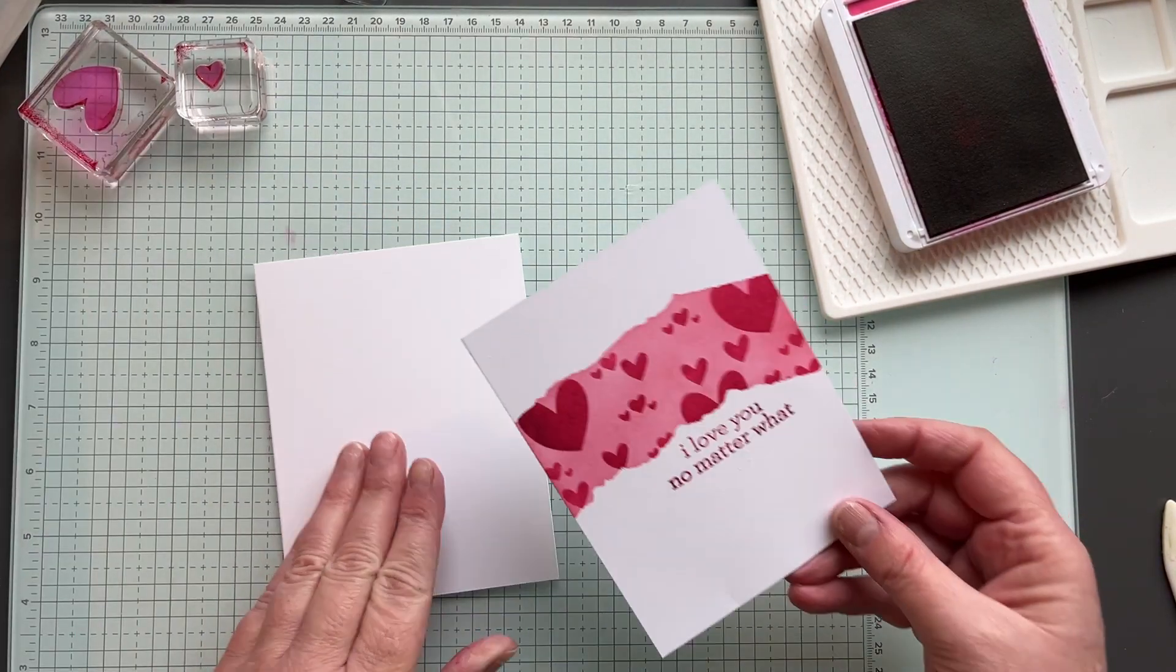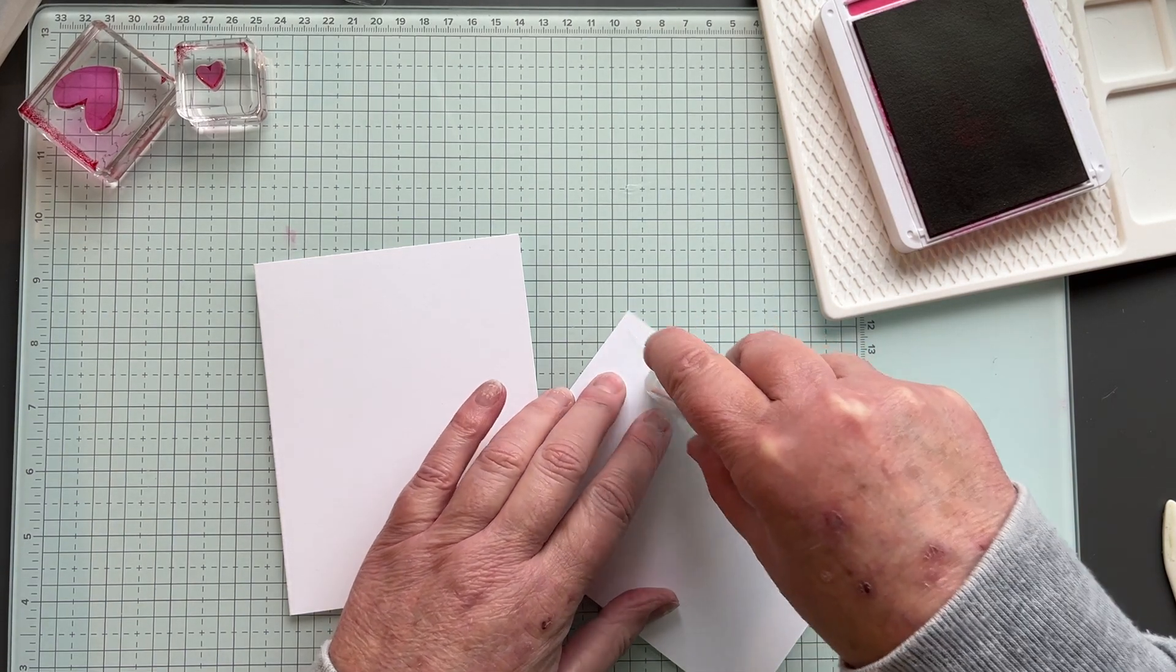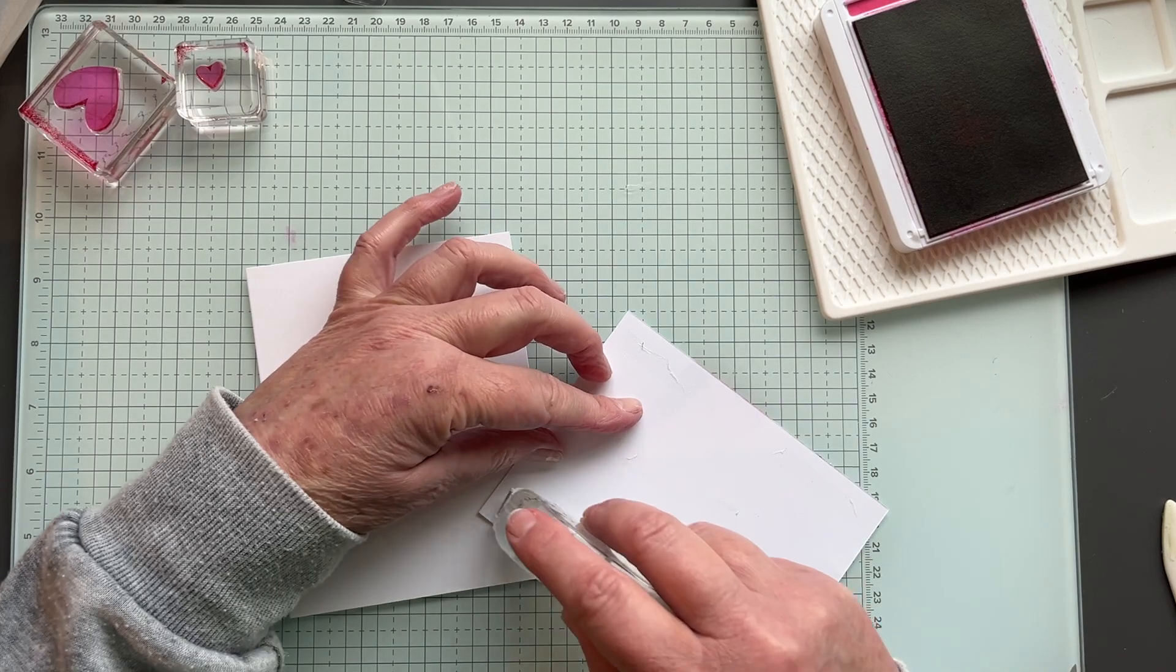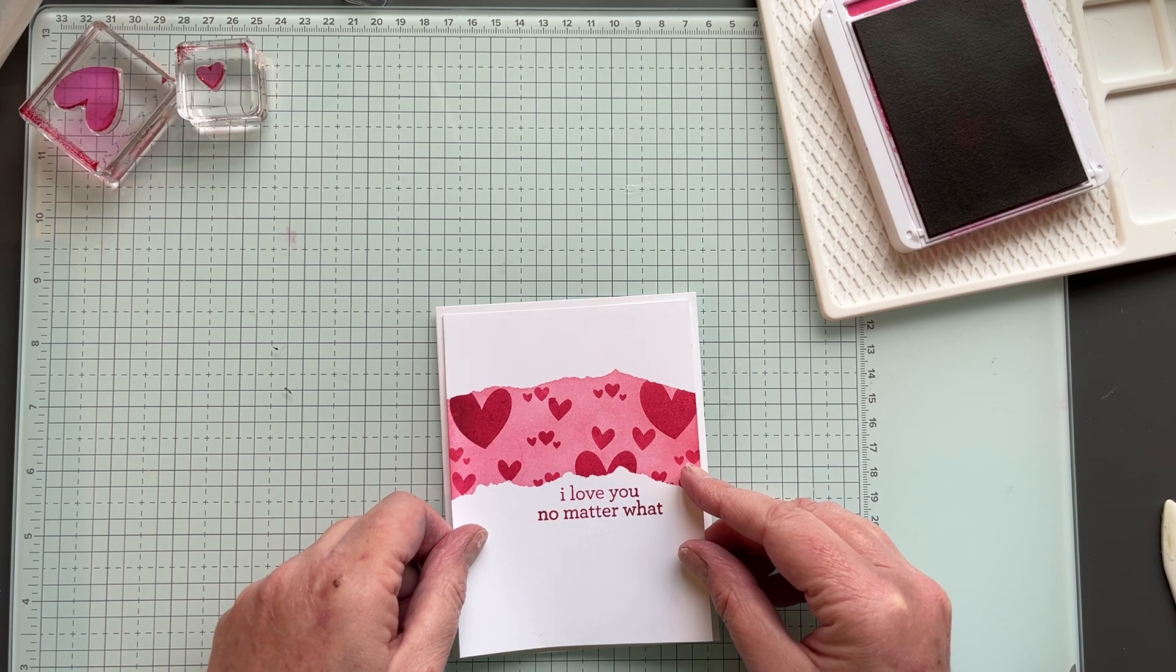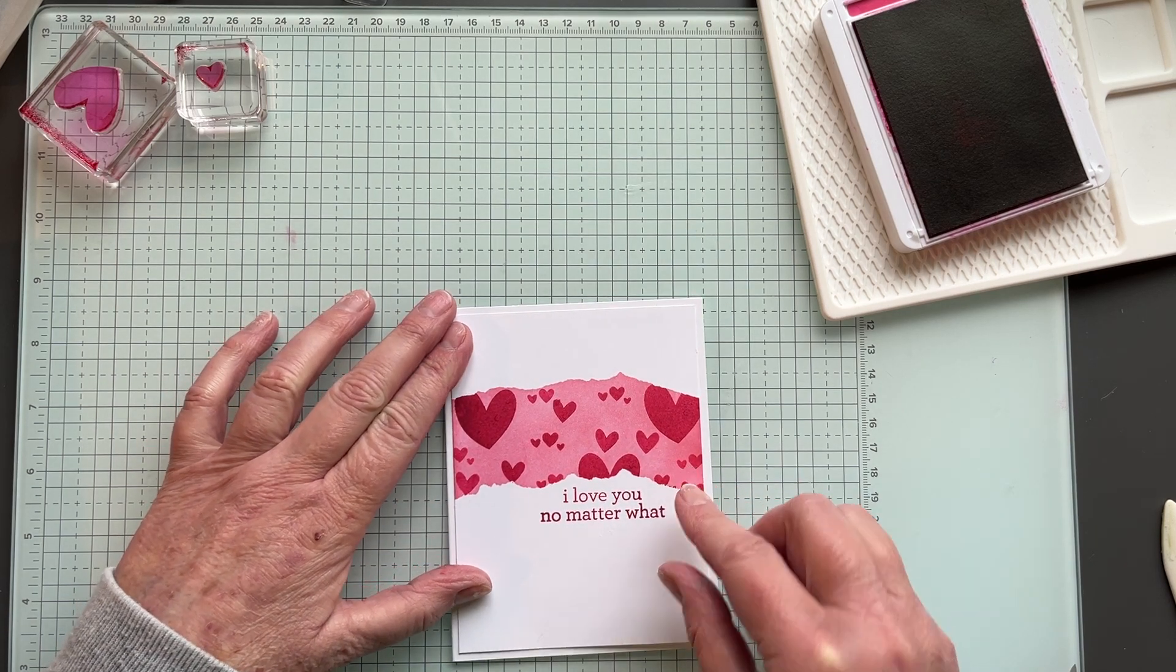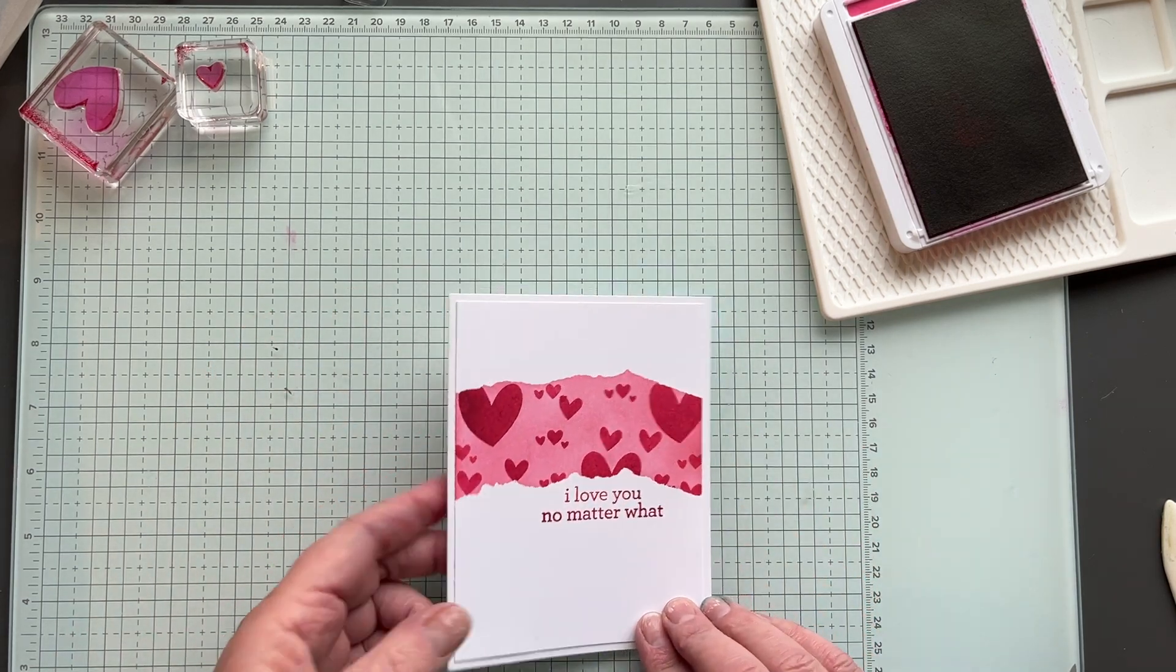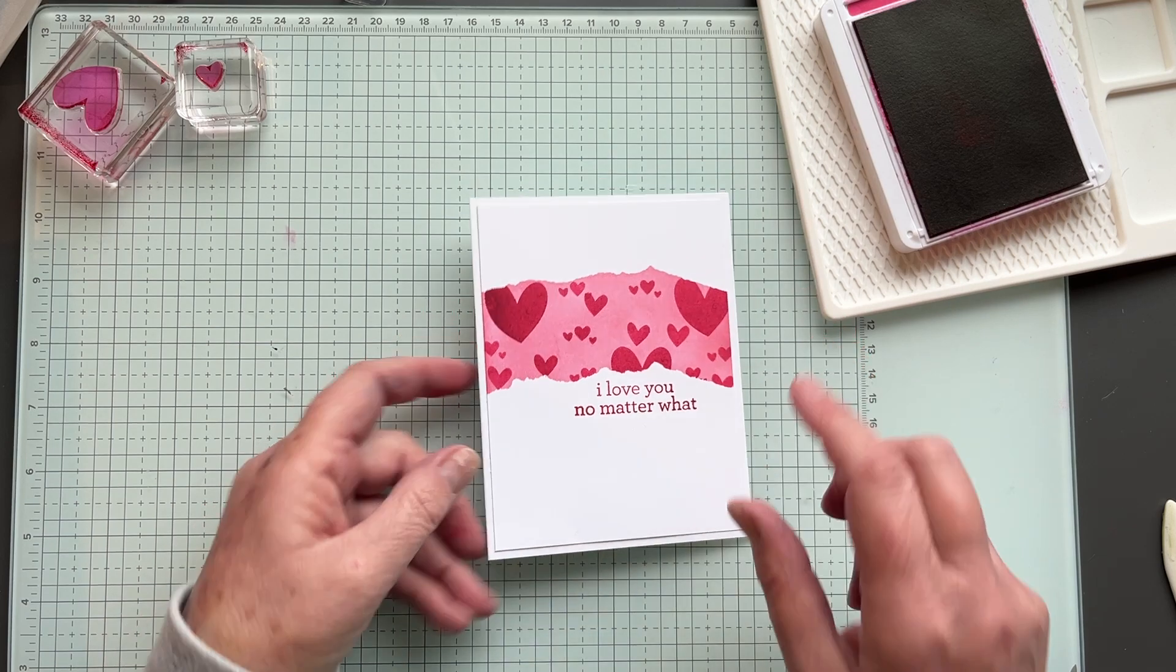And then all we're going to do is... Oh, I forgot my stamping seal. I'm just going to mount it on another white piece. I want to try and keep this card pretty simple. You could layer it onto either Melon Mambo or Bubble Bath, and that would be really pretty too. I was going for a clean and simple look this time.